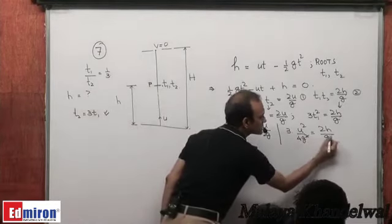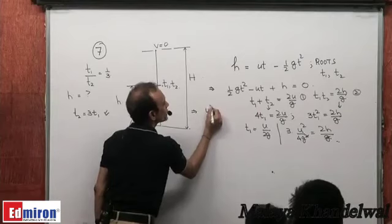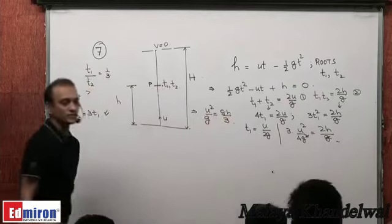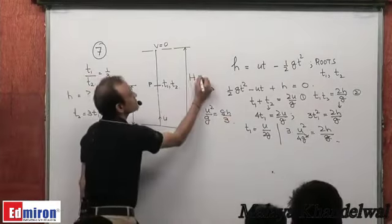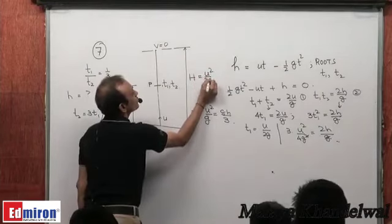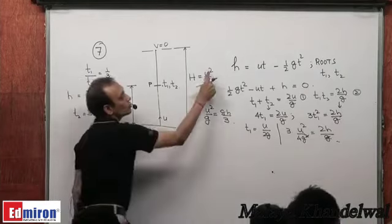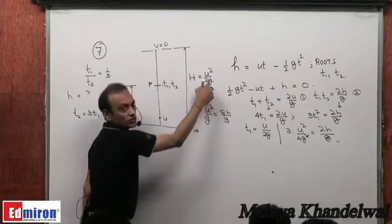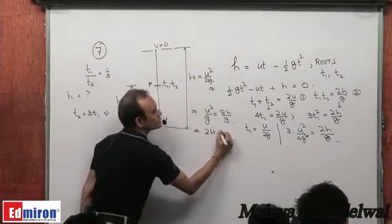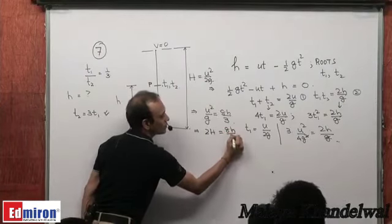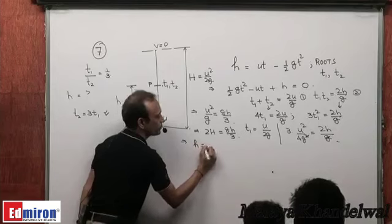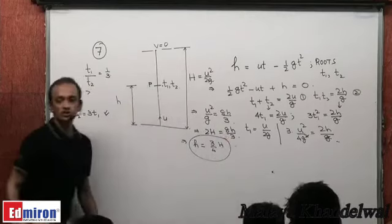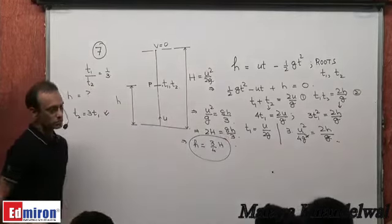From 3u²/(4g²) = 2h/g we get u²/g = 8h/3. But maximum height H = u²/(2g), so u²/g = 2H. Therefore 2H = 8h/3, giving h = 3H/4. The answer is h = (3/4)H.